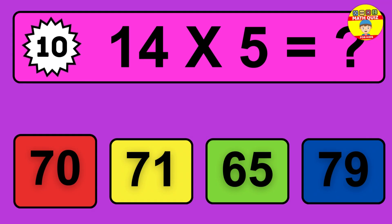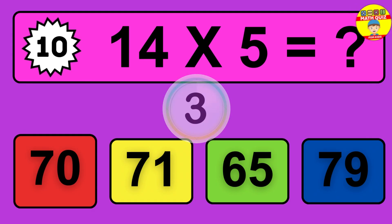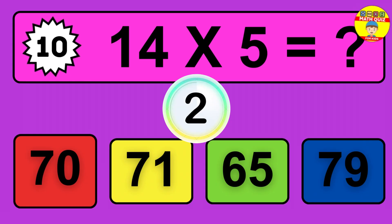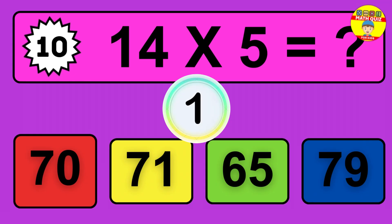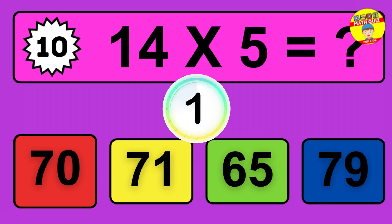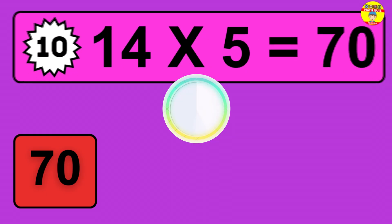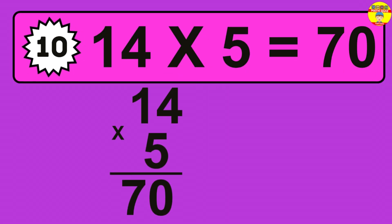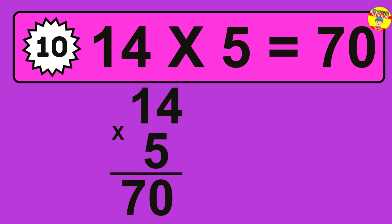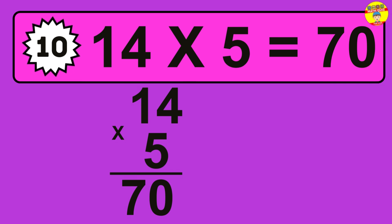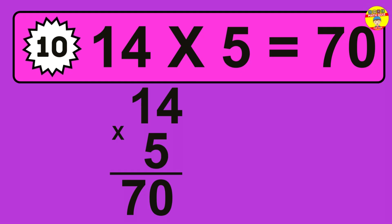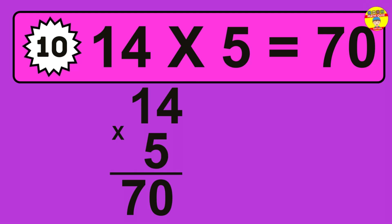Question 10. 14 times 5 equals what? The answer is 14 times 5 is 70. To calculate, we have 14 groups with 5 balls each one. So, how many balls do we have? 70 balls.